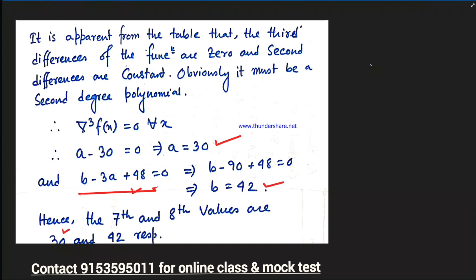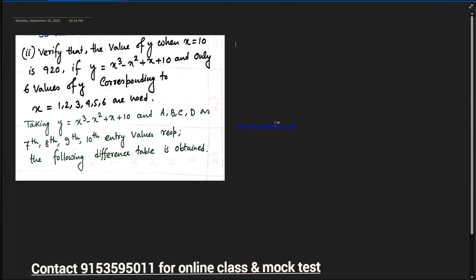Setting the value of b as 42. So the 7th term is 30 and the 8th term is 42. Completing the difference table completes the problem. The value of a is 30 and the value of b is 42.